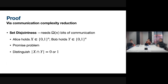The proof is via a communication complexity reduction. The classic problem is set disjointness, which requires a linear number of bits of communication. In this problem, Alice and Bob each have N binary bits, and the goal is to determine whether their binary vectors have zero intersection or exactly one intersection. To distinguish these cases, linear communication is required.